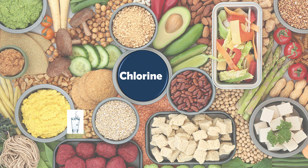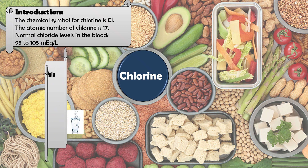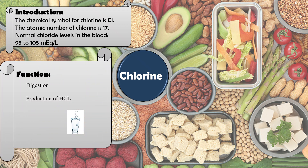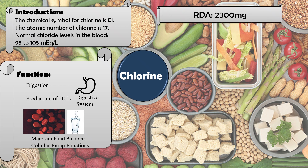The other dietary macromineral is chlorine, with symbol Cl and atomic number 17. Chloride is the form present in the body, with normal levels of 95 to 105 mEq/L. Chloride performs various functions including digestion through the production of HCl, maintaining fluid balance, and cellular pump functions. The RDA for chloride is 2300 mg.